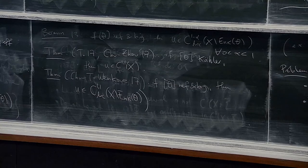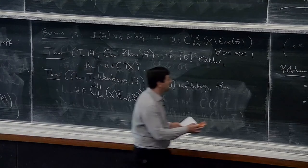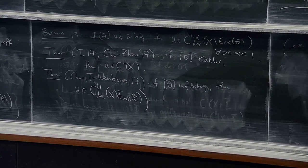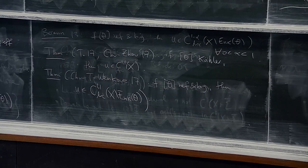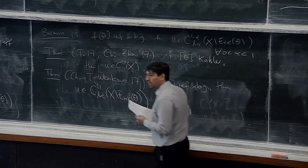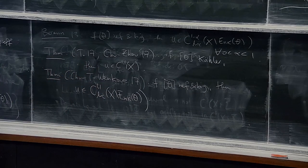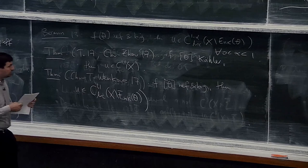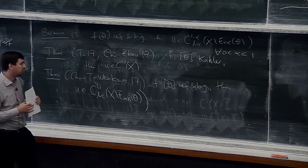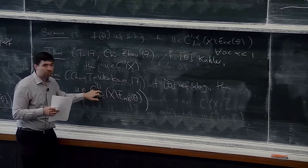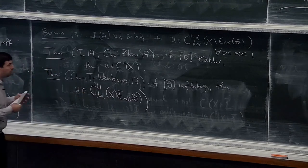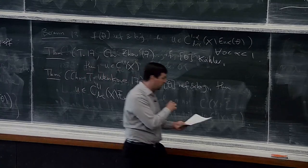There is also an application of this last result to C^{1,1} regularity of geodesic rays. Instead of a geodesic segment joining two points, a geodesic ray starts at a potential and goes to infinity. We proved that for geodesic rays coming from test configurations in the sense of Donaldson, you have the same C^{1,1} regularity locally. It also works for transcendental test configurations in the sense of Dietrich and Dervan-Ross.